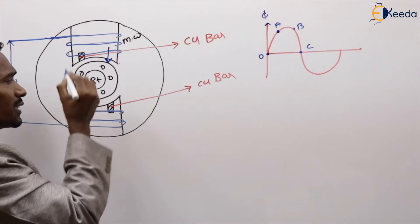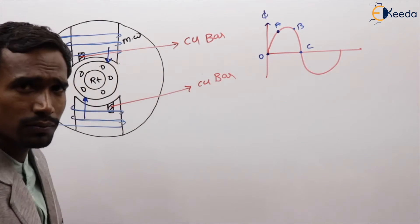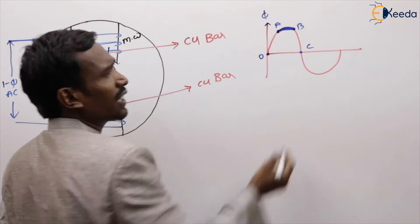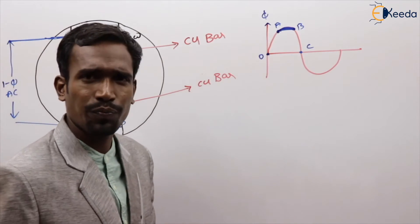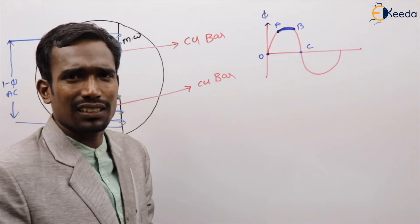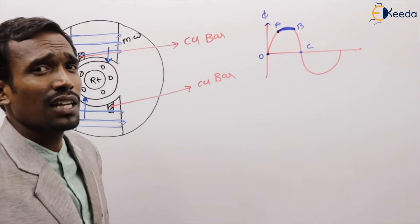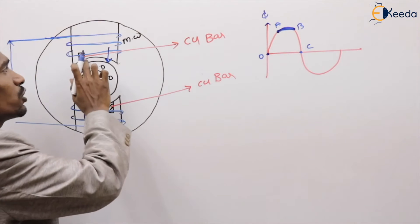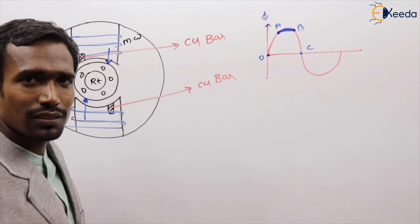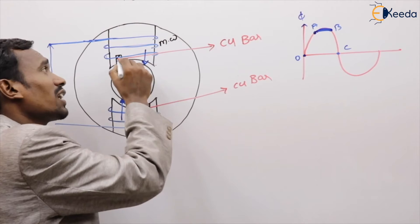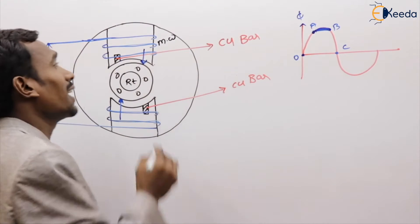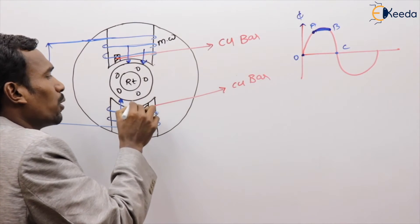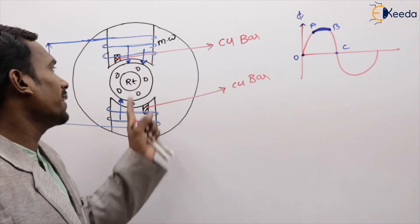The total flux is concentrated at the unshaded part of the main pole. Whereas from A to B, the rate of change of flux is very less or simply zero. There is no rate of change of flux, so there is no mutual induction and no EMF induced in the shaded rings. Then the total flux is concentrated at the middle of the main pole.